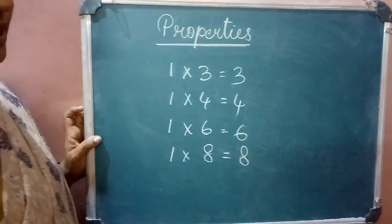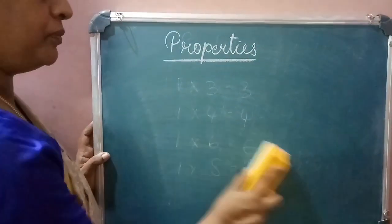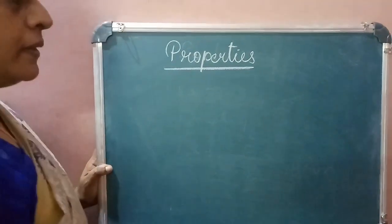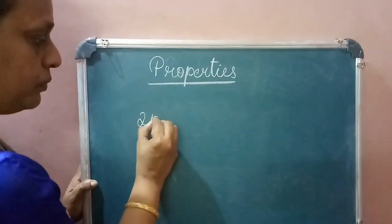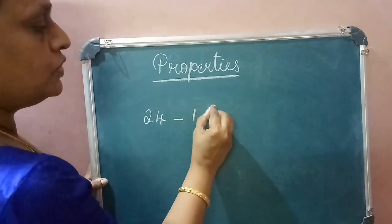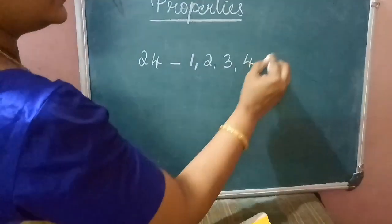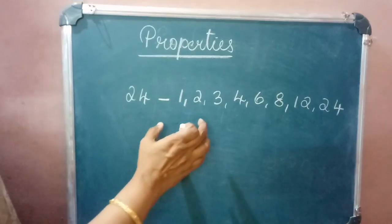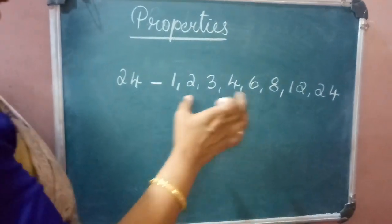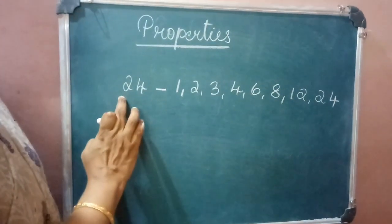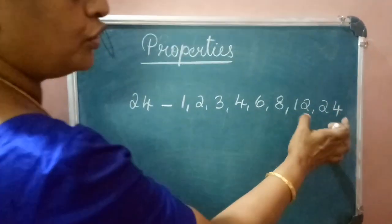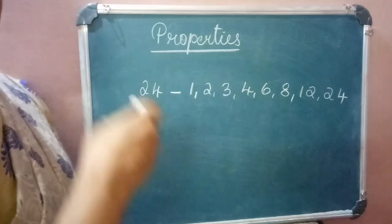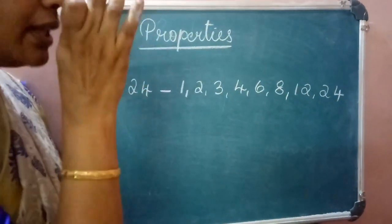The third property: take the example of 24. The factors of 24 are 1, 2, 3, 4, 6, 8, 12, and 24. Now consider all these factors — all of them are less than or equal to 24. So for any number, all its factors are less than or equal to that number.